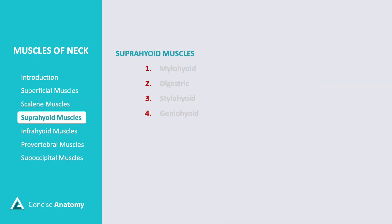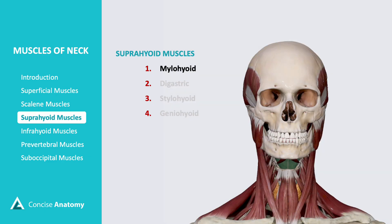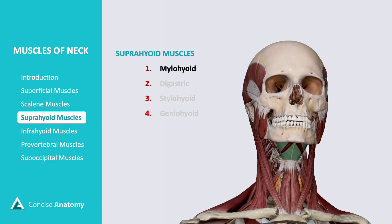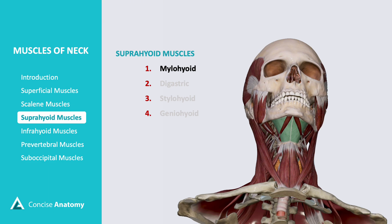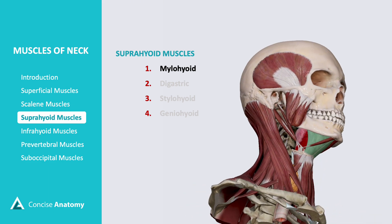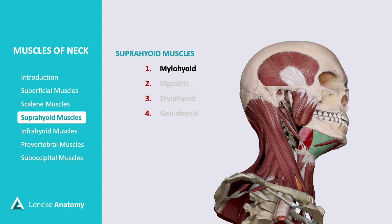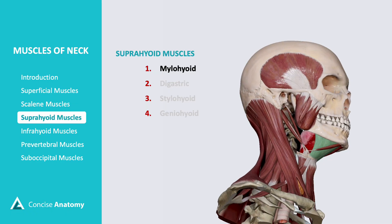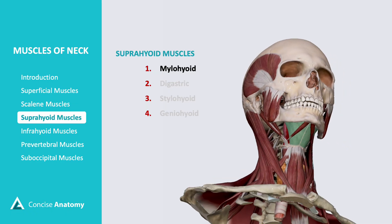The suprahyoid muscles are a group of four muscles located above the hyoid bone, playing a crucial role in swallowing, speaking, and movements of the tongue and jaw. Mylohyoid forms the floor of the mouth and helps elevate the hyoid bone, tongue, and floor of the mouth during swallowing and speaking.